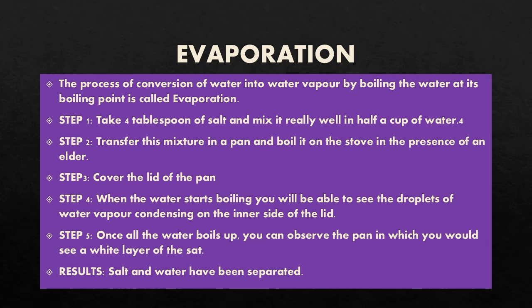Transfer this mixture into a pan and boil it on the stove in the presence of an elder. Cover the lid of the pan. When the water starts boiling, you will be able to see droplets of water vapor condensing on the inner side of the lid. Once all the water boils up, you can observe a white layer of salt in the pan. The result is that salt and water will be separated.